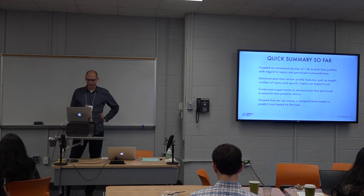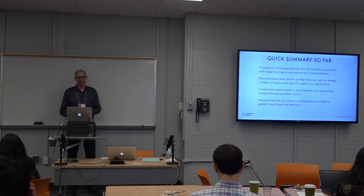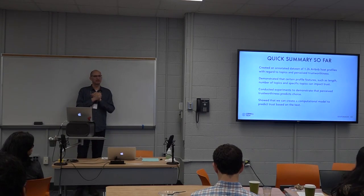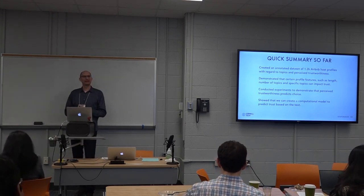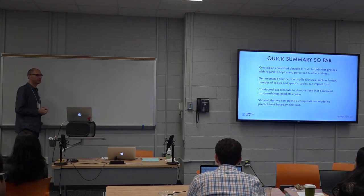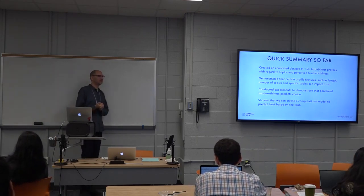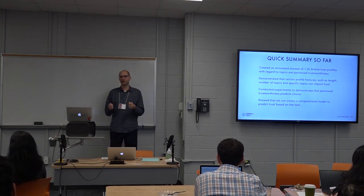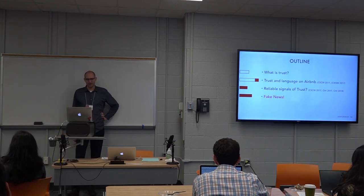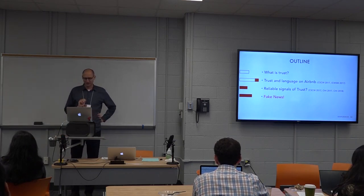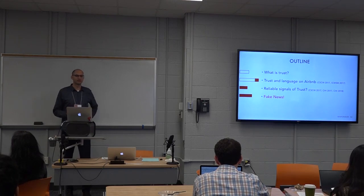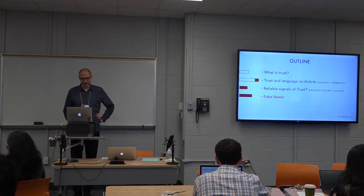Quick summary so far: we created an annotated dataset of about 1,200 Airbnb host profiles; showed that certain features impact perceived trustworthiness; showed that predicts choice; and that we can predict it automatically. Now let me connect that to signaling theory, then talk about another work using location logs as trust signals, and finally hypothesize how this relates to truth and fake news.